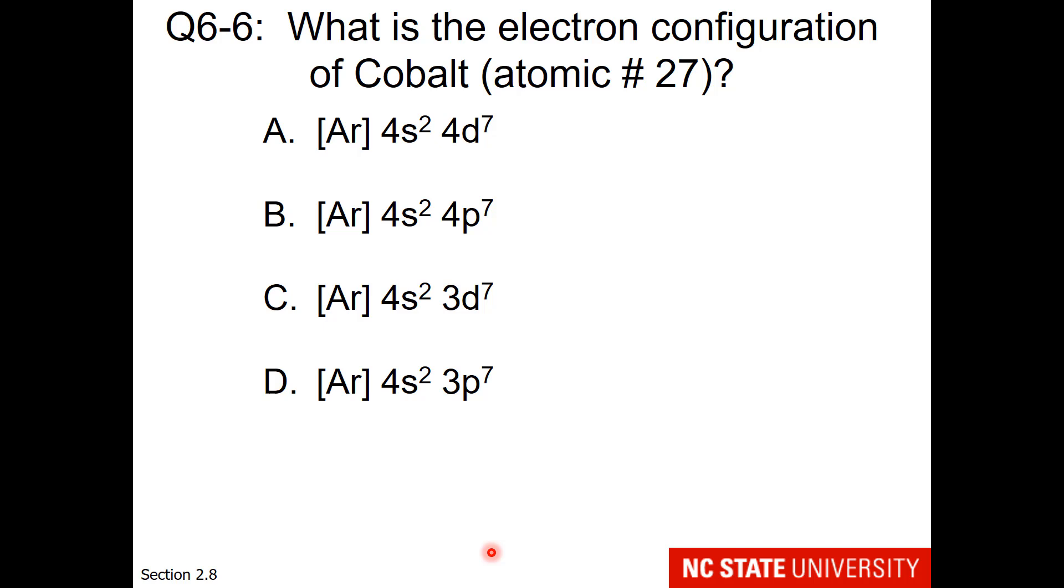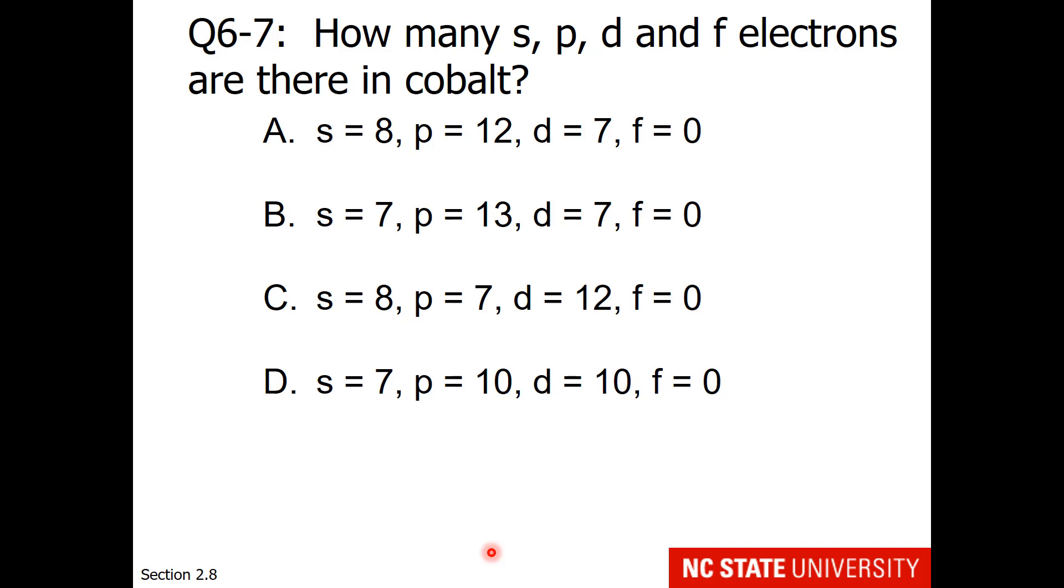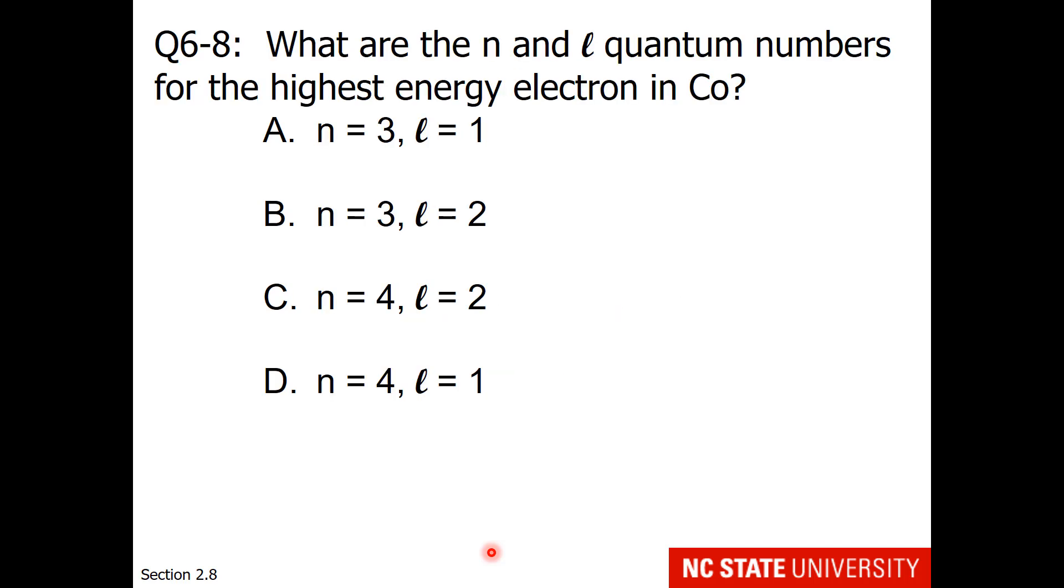This question asks, what is the electron configuration of cobalt? And of course we mean in the ground state. Don't forget in your D block you need to do N minus 1. This question asks, how many S, P, D, and F electrons are there in cobalt? Important reminder, don't forget that helium counts in your S electrons. What are the N and L quantum numbers for the highest energy electron in cobalt when it is in the ground state? So please get the electron configuration and then determine the quantum numbers for the highest energy electron.